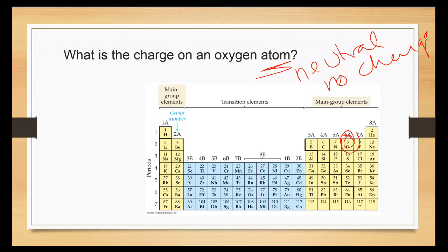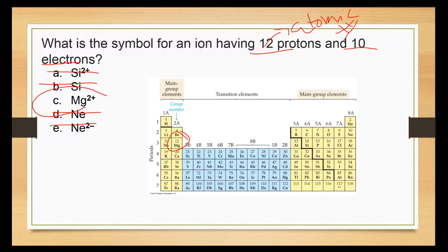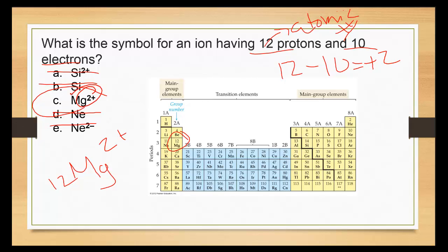What is the symbol for an ion having 12 protons and 10 electrons? Twelve protons means atomic number 12 — that's magnesium. Magnesium has an atomic number of 12, and 12 minus 10 equals positive 2, which is why we have a plus 2 charge. Confirming the trend once again: plus 1, plus 2, plus 3, skip, minus 3, minus 2, minus 1, zero.